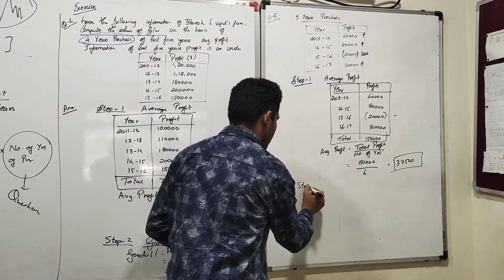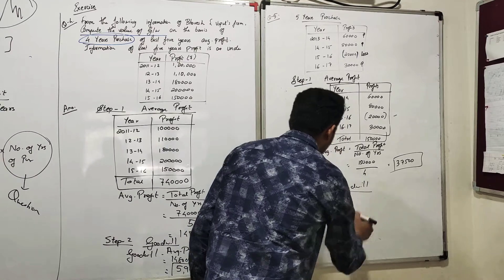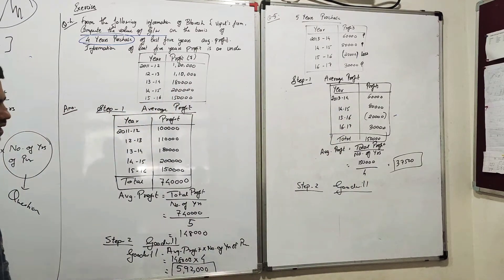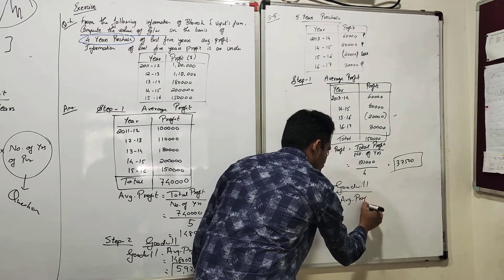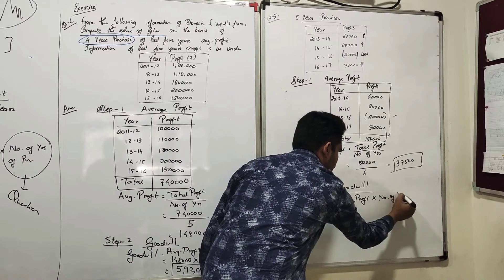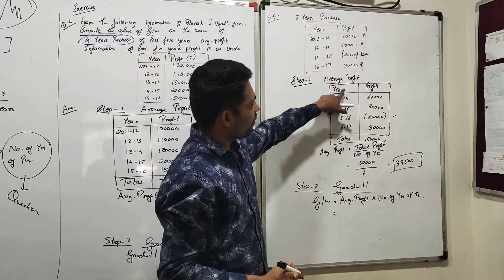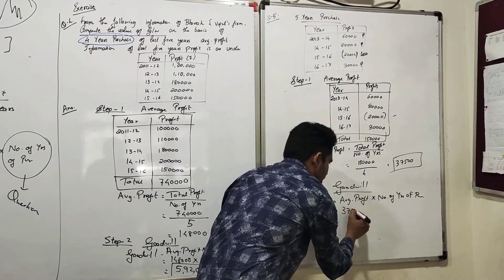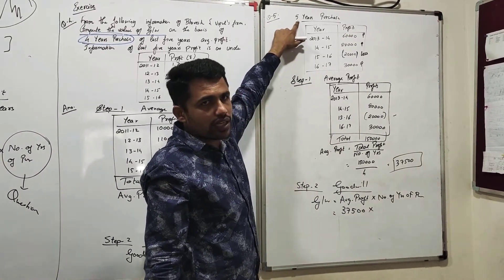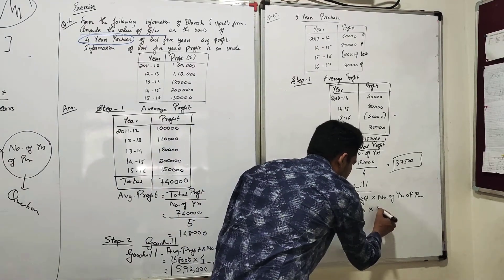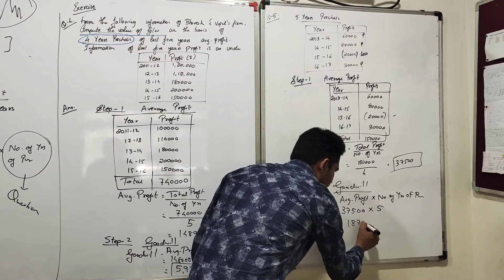We have finished Step One. Now moving to Step Two — Goodwill. The formula of goodwill is Average Profit multiplied by Number of Years of Purchase. Average profit is thirty-seven thousand five hundred. The number of years of purchase specified in the question is five. So: thirty-seven thousand five hundred multiplied by five equals one lakh eighty-seven thousand five hundred.